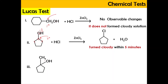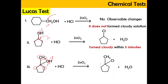For the third structure, the carbon is attached to one, two, and three alkyl groups, so it is a tertiary alcohol. When tested under the Lucas test with HCl and zinc chloride, the OH can be replaced with Cl very easily because tertiary alcohol is very reactive towards the Lucas test. OH is replaced with Cl, H2O is released as by-product, and the solution turns cloudy immediately with two layers of solution formed.